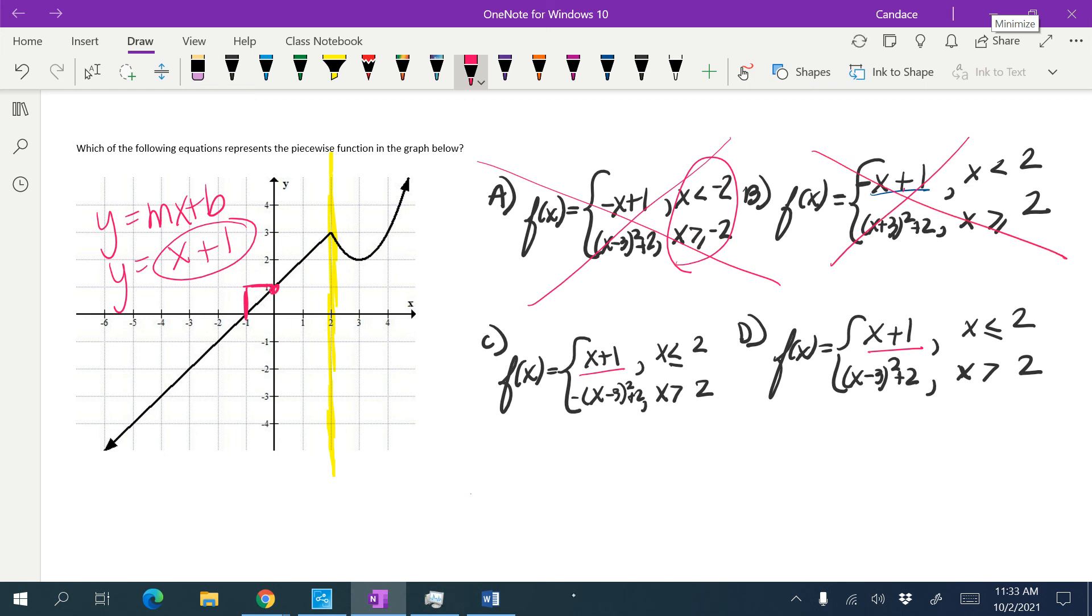So now I'm looking at my parabola here. So with my parabola, my y-intercept, or sorry, not my x, my vertex, not my y-intercept. My vertex is out 3 and up 2.